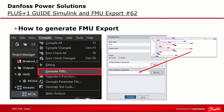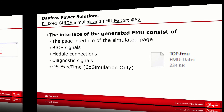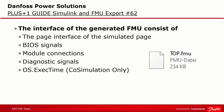These messages will appear at the interface of the generated FMU. As soon as you click Generate FMU, the export will be generated from the current page in Plus+1 Guide and automatically include any modules or sub-pages on that page. The interface of the generated FMU consists of the page interface of the simulated page — all signals and buses — CAN messages as defined by the CAN database, bias signals like the operating system start, loop count, and execution time (also called processing time), which can be used to set the step size in milliseconds during co-simulation.